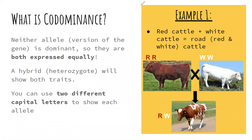The next kind of inheritance pattern is co-dominance. What does it mean to be co-dominant? Think of a co-worker — they work with you, not for you and not behind you. Co-dominance is when neither allele is dominant, so they're expressed equally with each other. A hybrid will show both traits equally.